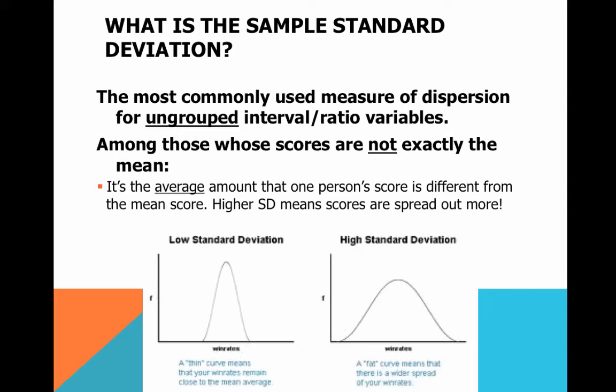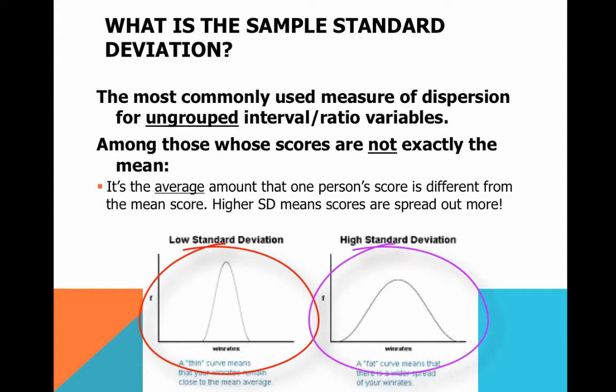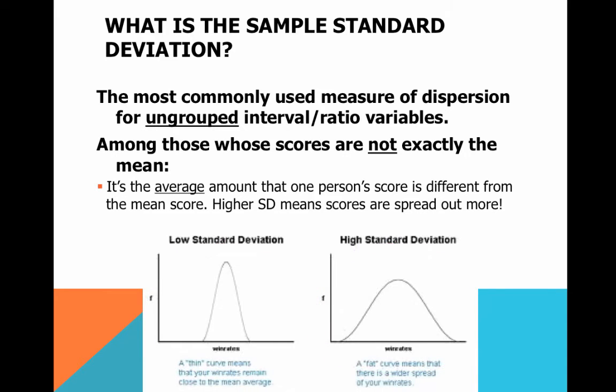Here we see our red and our purple lines from one of the first few slides. A low standard deviation, a thin curve, means that most of your scores are right in the middle, hovering right around the average. Whereas a fat, wide, flatter curve means that you have more variability — a high standard deviation.